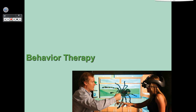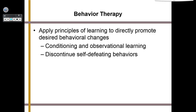An almost direct opposite of gestalt therapy is behavior therapy. Behavior therapy applies the principles of learning to directly promote desired behavioral changes, using conditioning and observational learning. It's used to discontinue self-defeating behaviors like jumping to conclusions, eating fast food as a coping mechanism, or smoking.